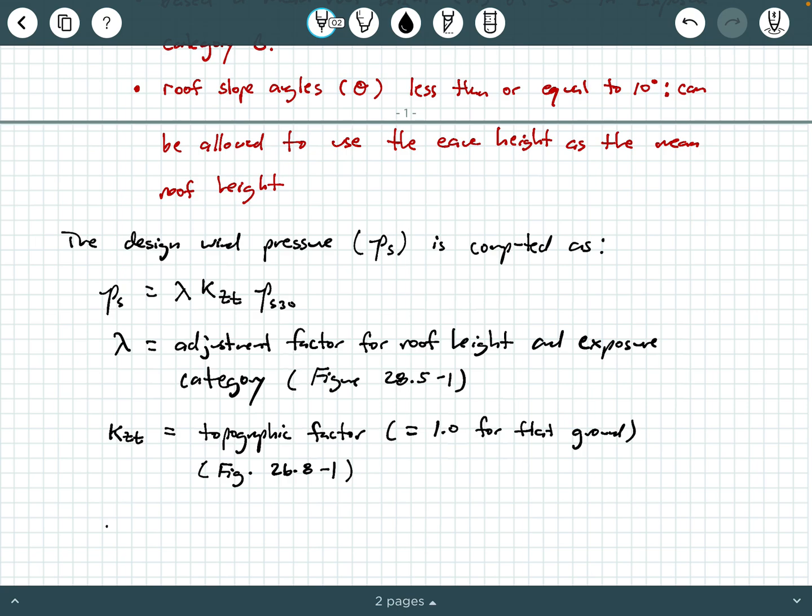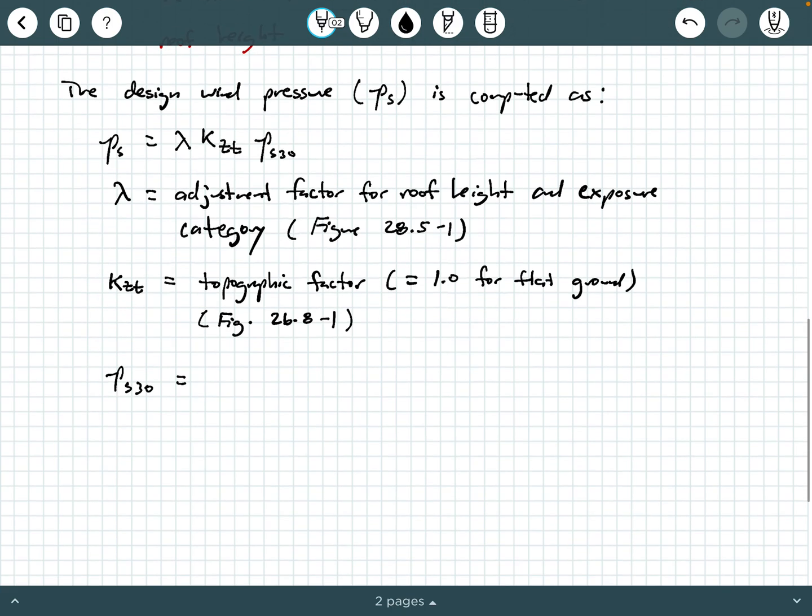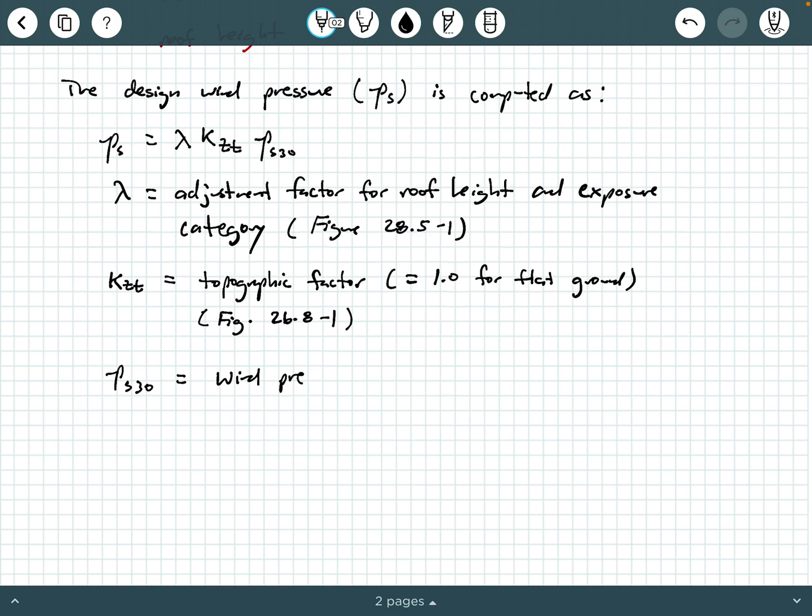The P sub S30 values are called the wind pressure values for exposure category B and a 30-foot mean roof height. This is going to come from a table of values. This will come from chapter 28, figure 28.5-1. It's labeled as a figure, but it's actually a table with a lot of values in it. That starts on page 317 in my ASCE 7-16.